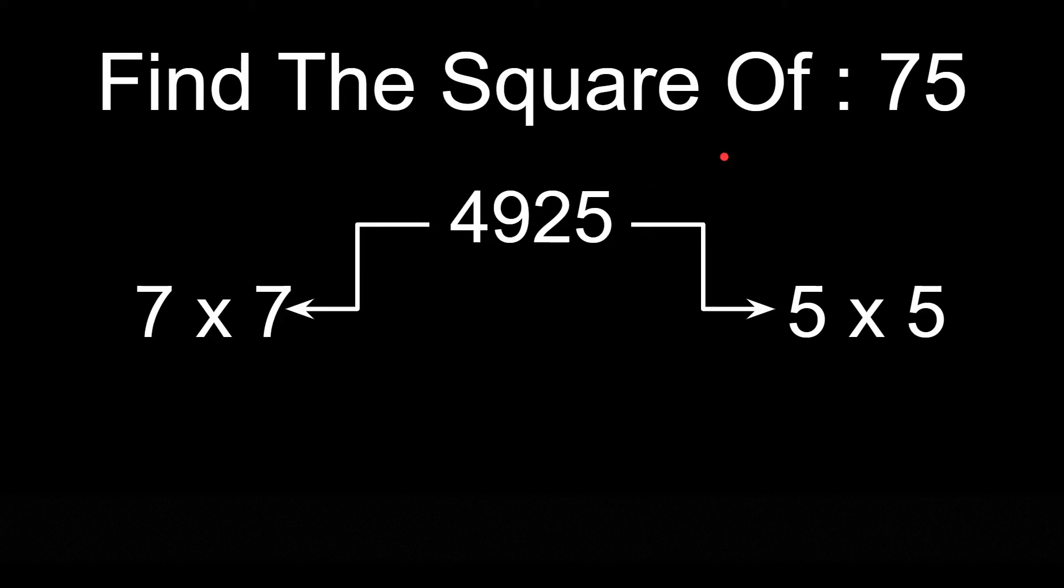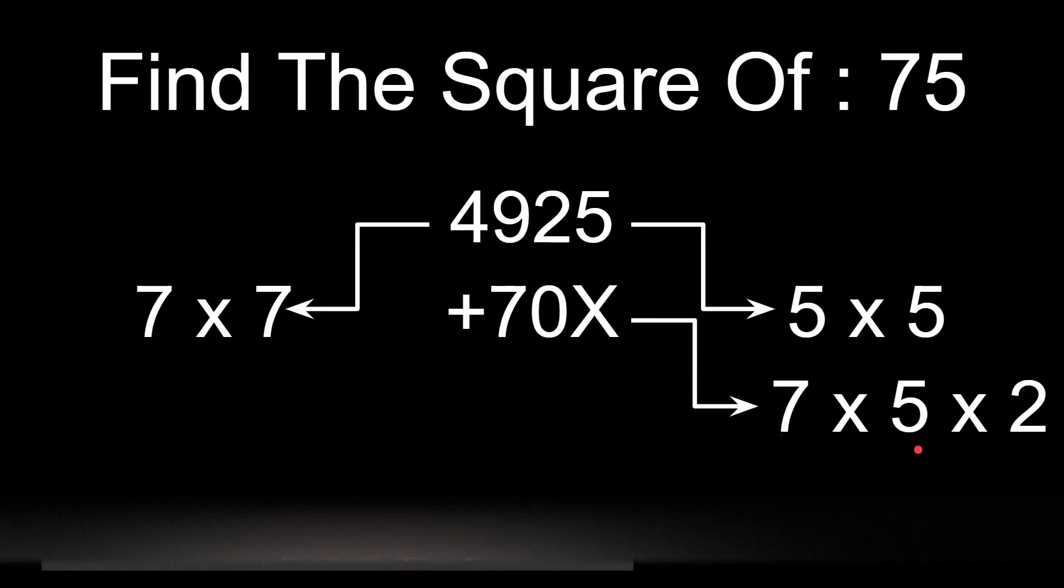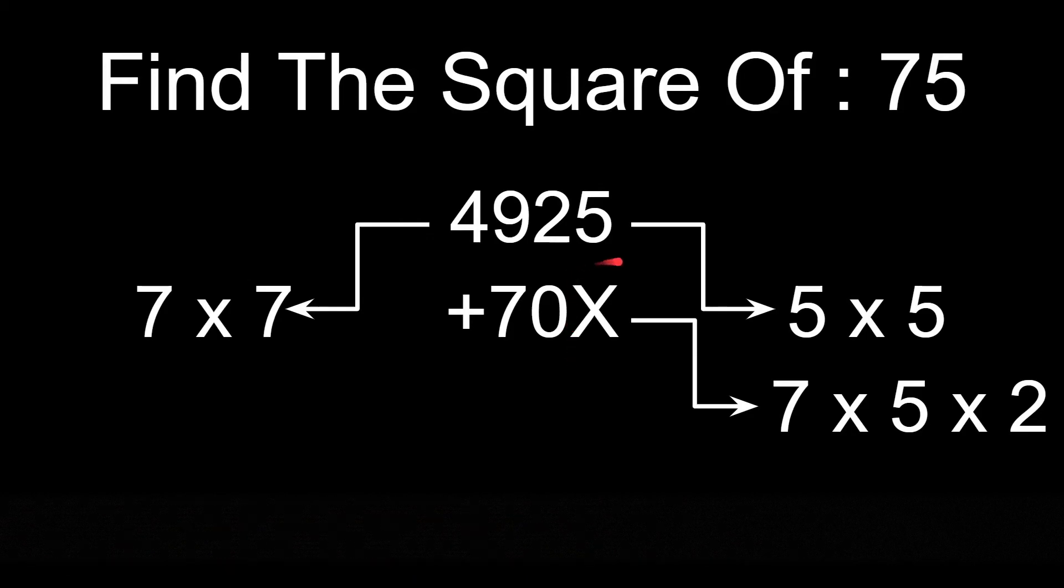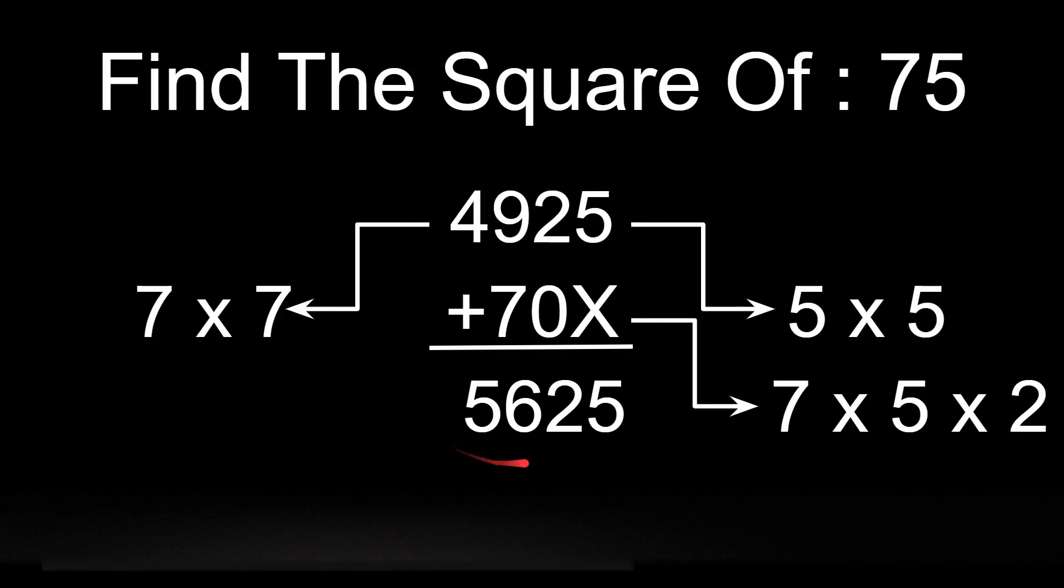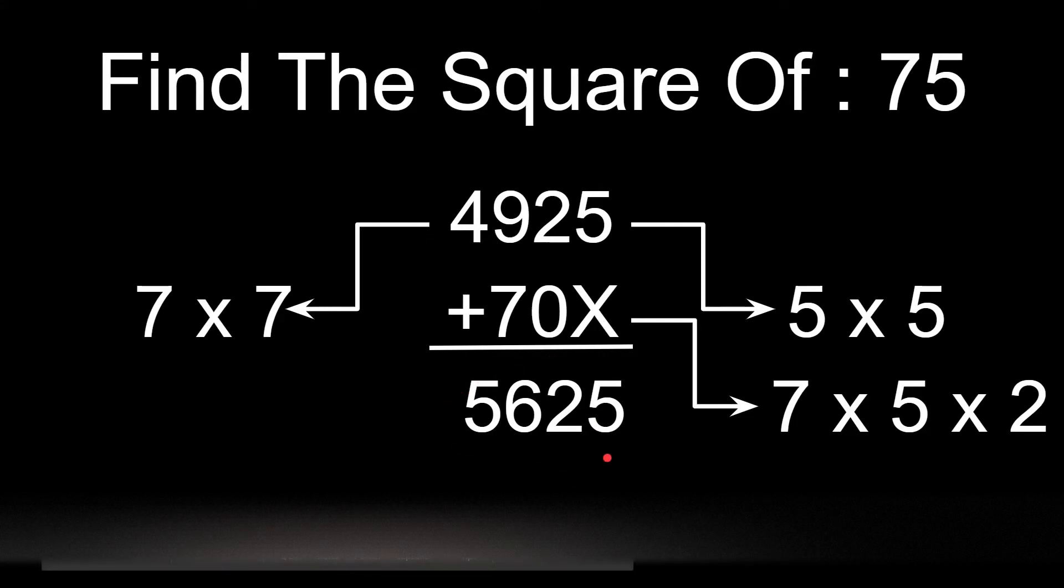Now we have to add 7 into 5 into 2 from the 10th place. Like this. 7 into 5 is 35, into 2 is 70, and we have added it from the 10th place leaving the unit's place as x. And our answer is 5625, which is the square of 75.